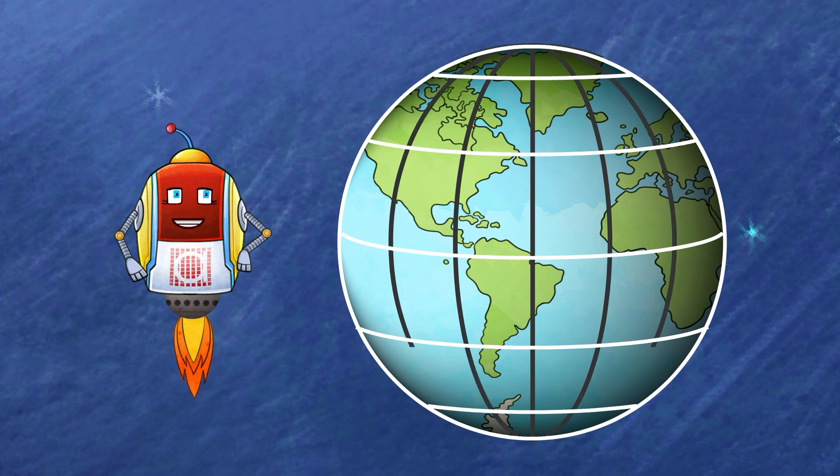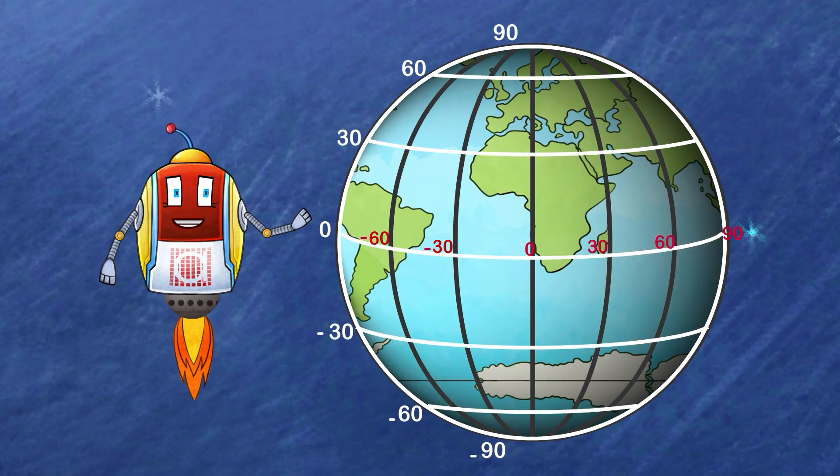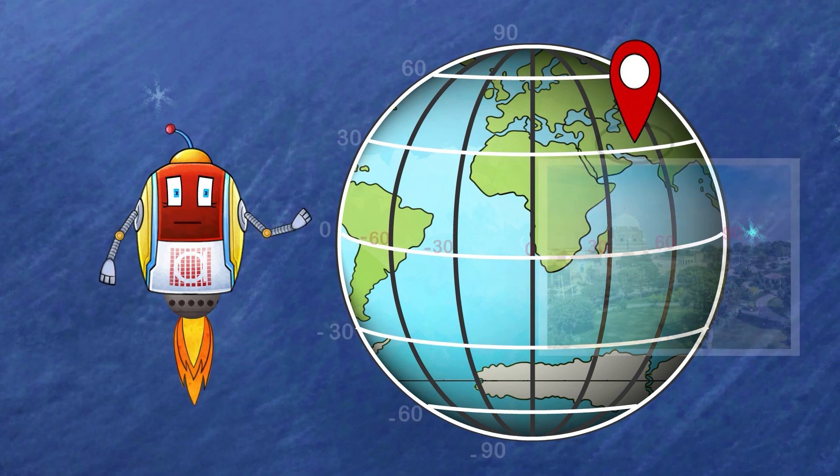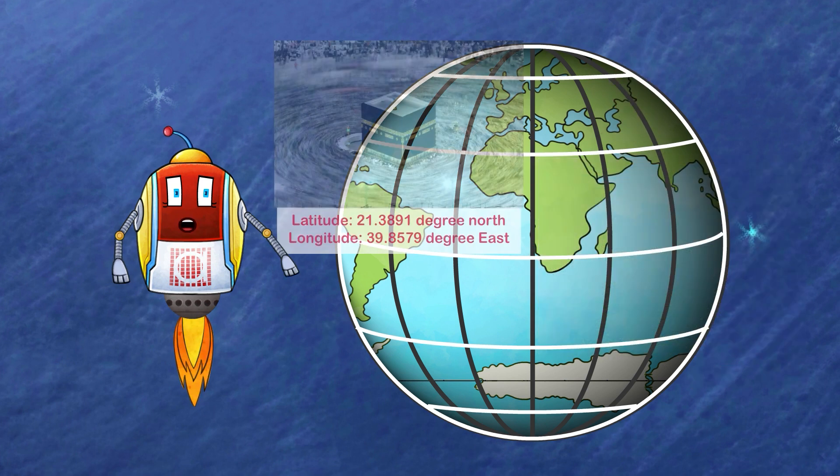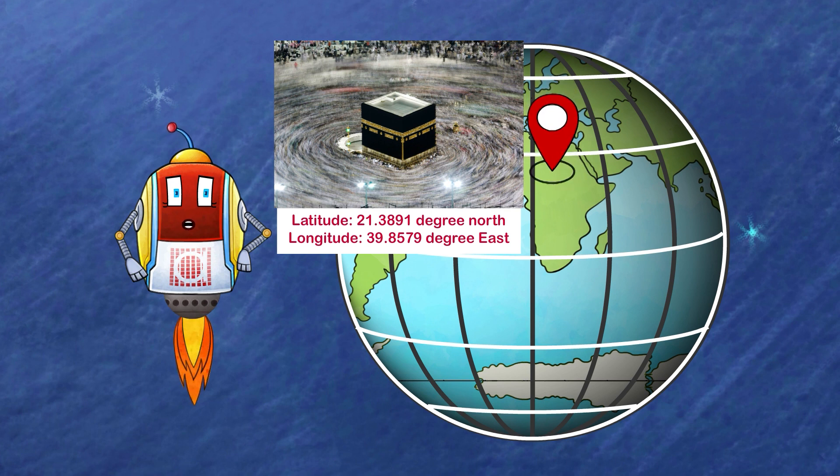Now when we put longitude and latitude together, we can find any place on Earth. For example, when we say the coordinates are 30 degrees north and 70 degrees east, we are talking about Pakistan. Makkah: latitude approximately 21.3891 degrees north, longitude approximately 39.8579 degrees east.